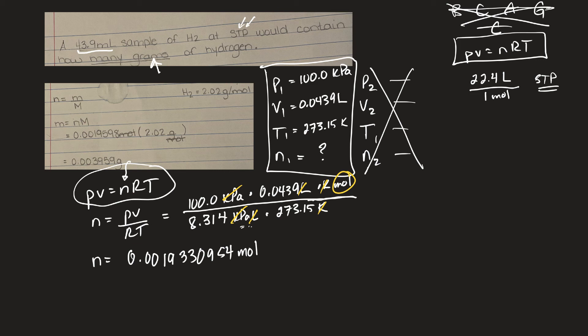Okay, now I need to convert that to mass, and so I'll use this formula. Moles is equal to mass over molar mass. So mass then is equal to moles times molar mass.